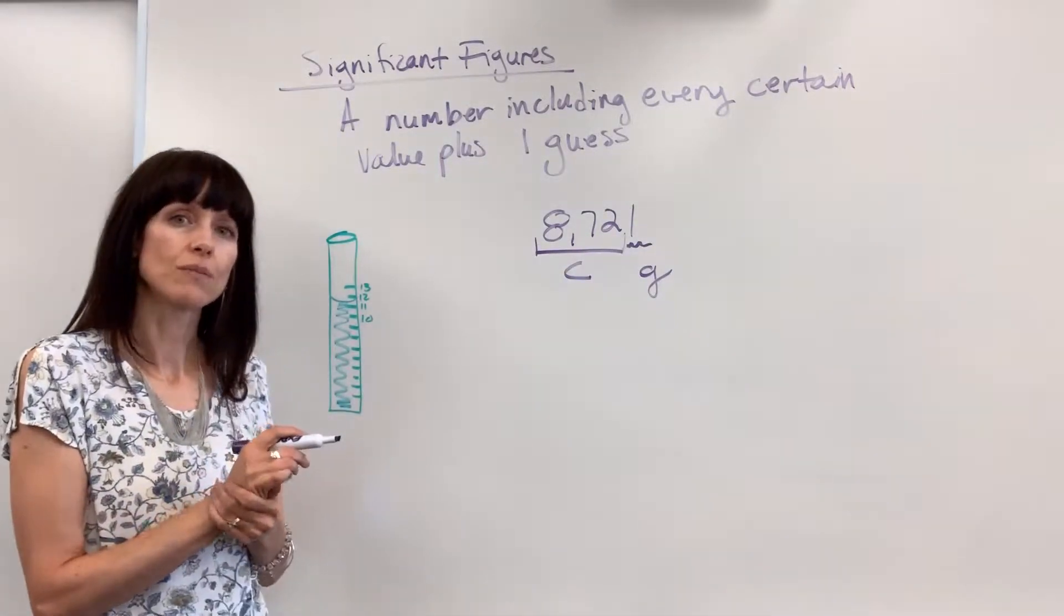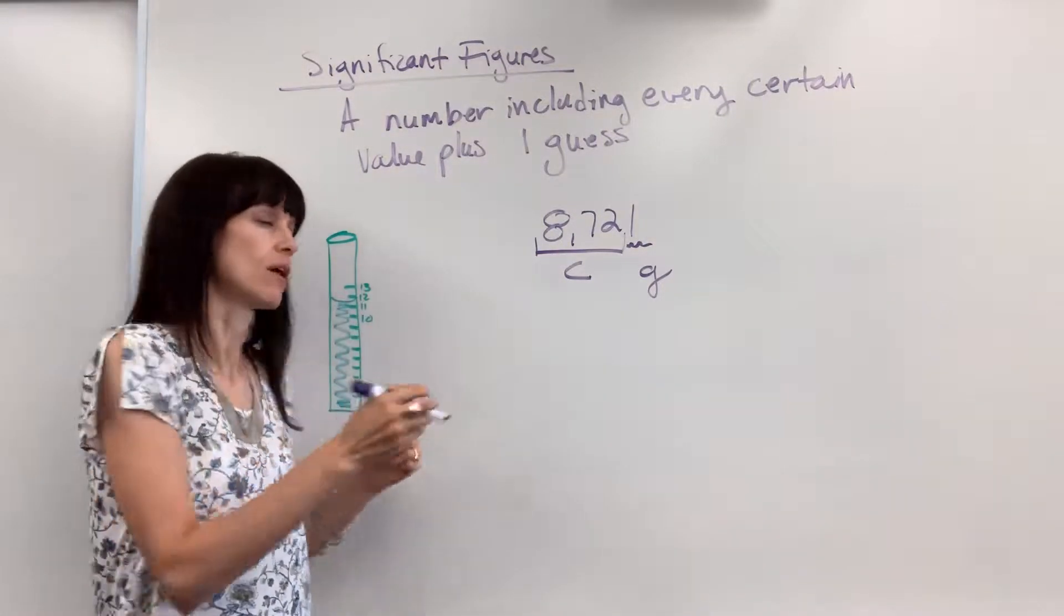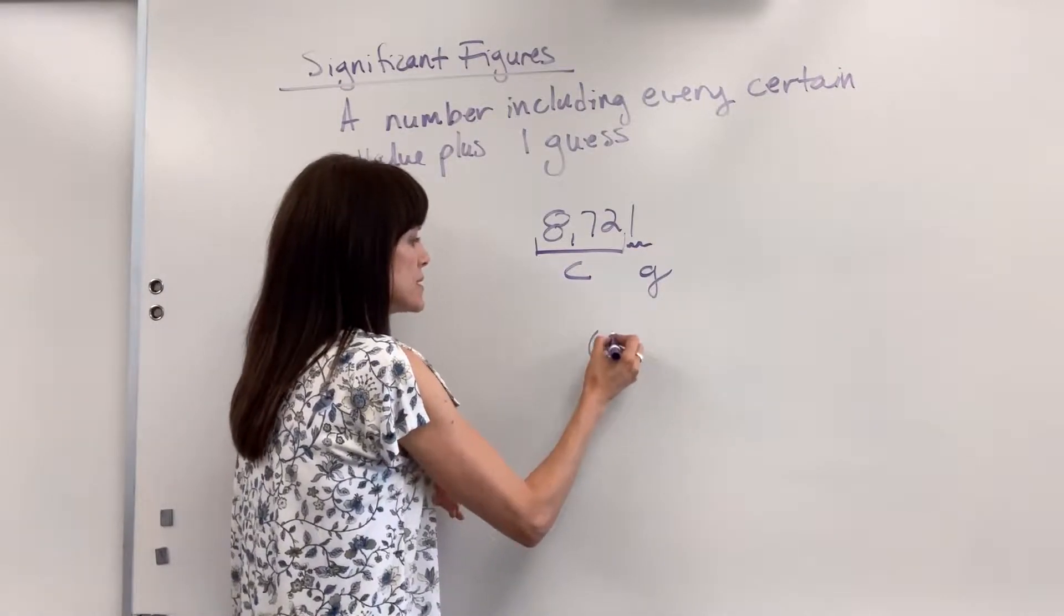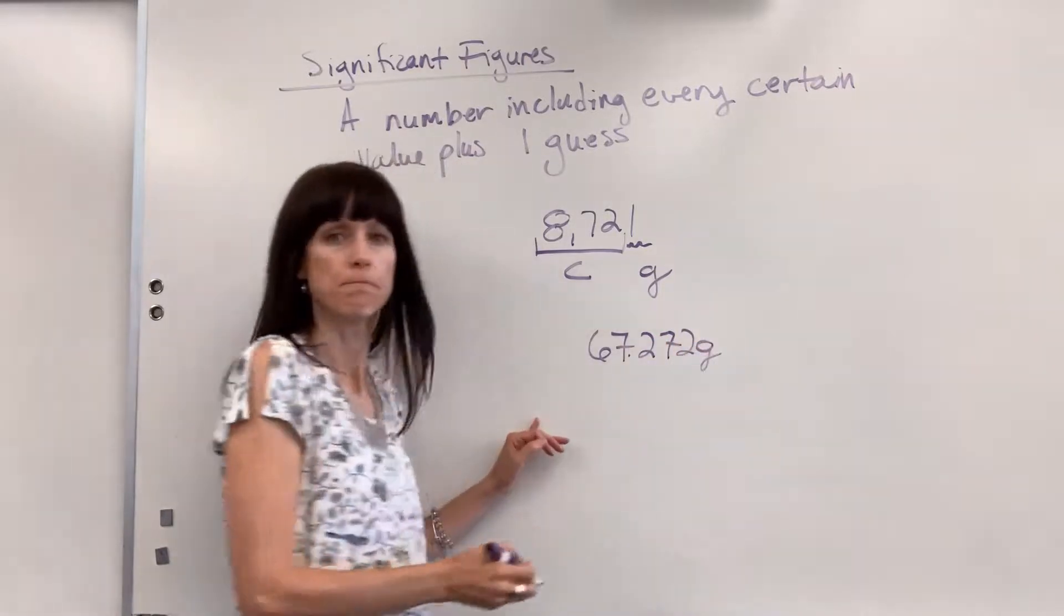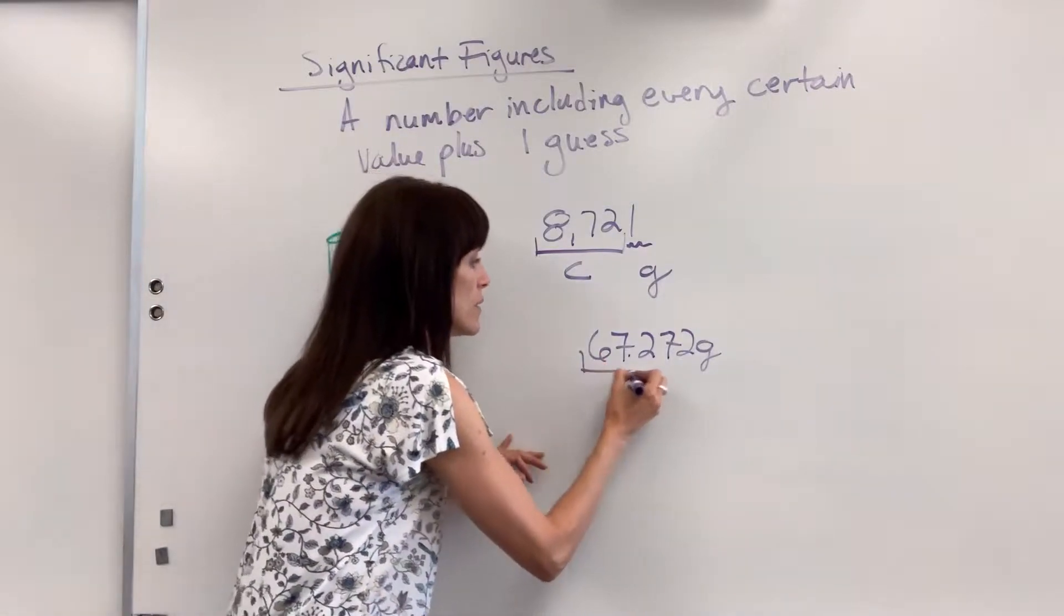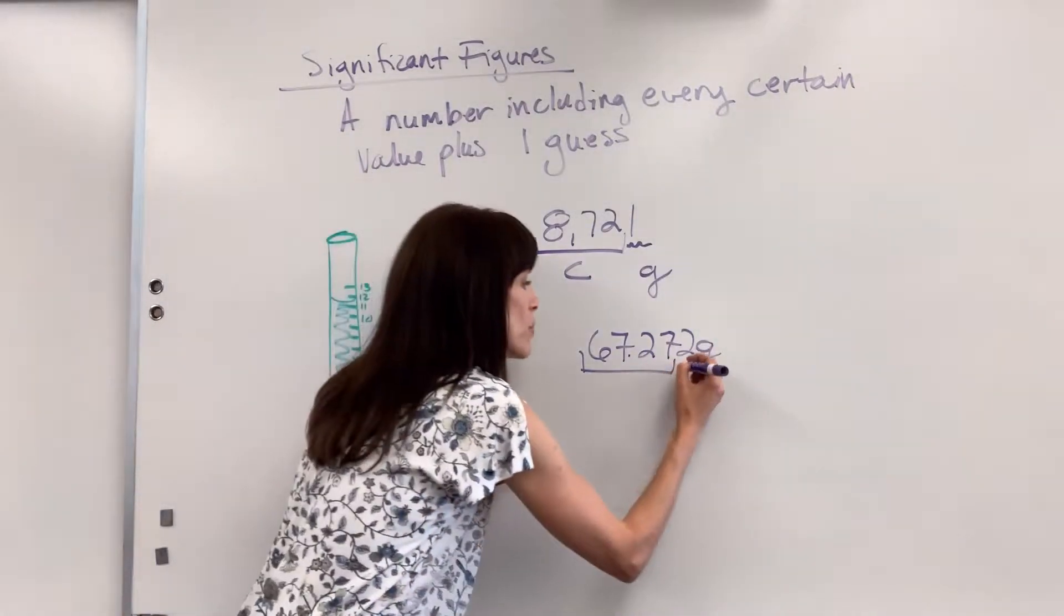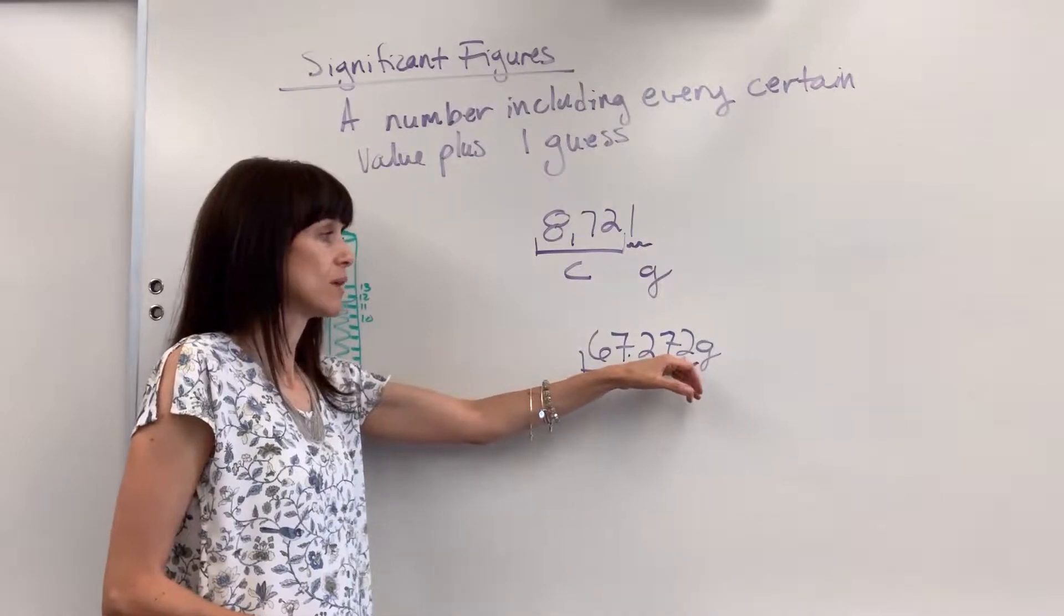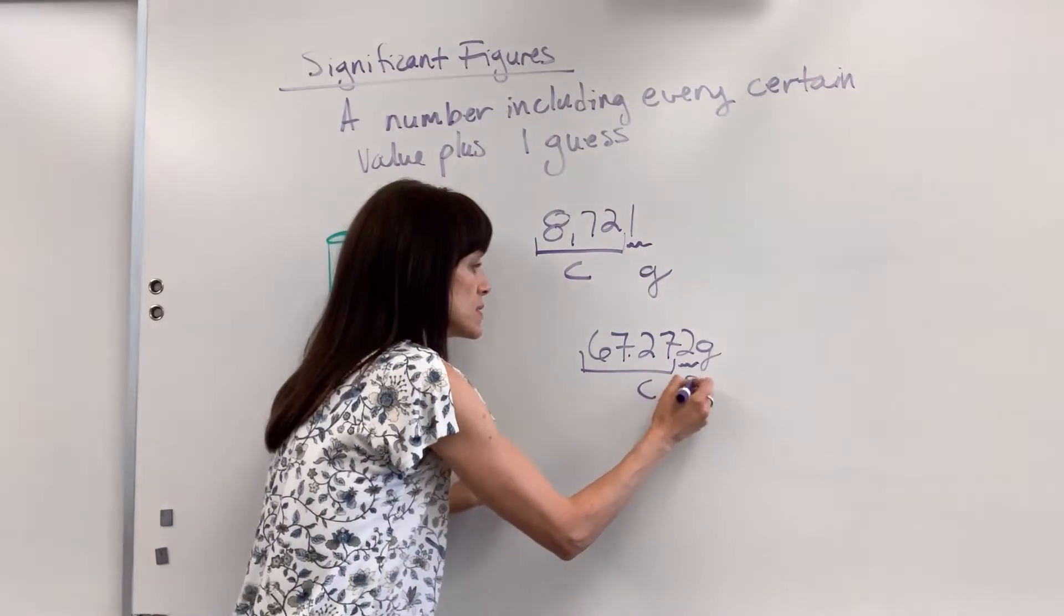When you're using electronic equipment, it will always give you a sig fig. I have some really nice OHAS scales. Let's say it gives us 67.372 grams. Here's what it's telling me: with certainty, the scale knows there is 67.27 grams. This 0.2, that's the guess. It could be a 1, a 0, a 4 is close, but we're not quite certain. So this is certain, this is the guess.